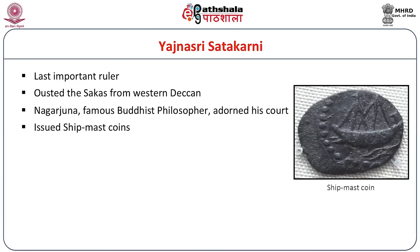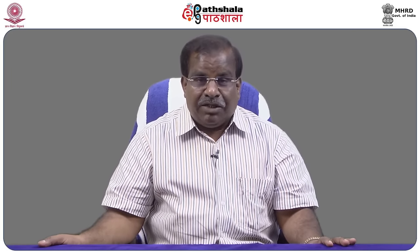Nagarjuna, the famous Buddhist philosopher and founder of the Madhyamika philosophy, adorned his court and wrote several works of Buddhist literature. Yajnashri Satakarni enlarged the famous Amaravati stupa with stone railings, making Amaravati an important Buddhist center in Andhra. After Yajnashri Satakarni, the Shatavahana empire started to decline. The remaining three rulers were very weak. The Shatavahana rule came to an end in the early Christian era due to the rise of many local powers in Andhra, Maharashtra, and other parts of the Deccan.